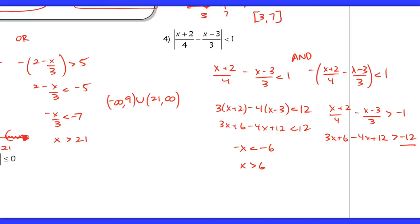And if I move over everything, I still have negative x is greater than negative 24 minus 6, negative 30. So x is less than 30.